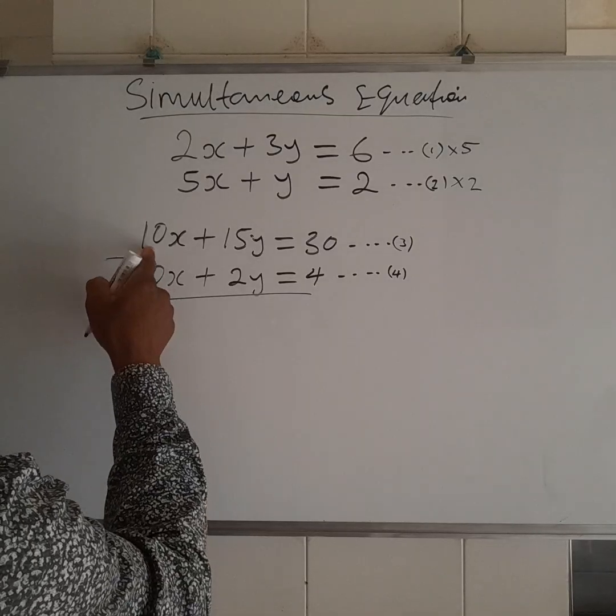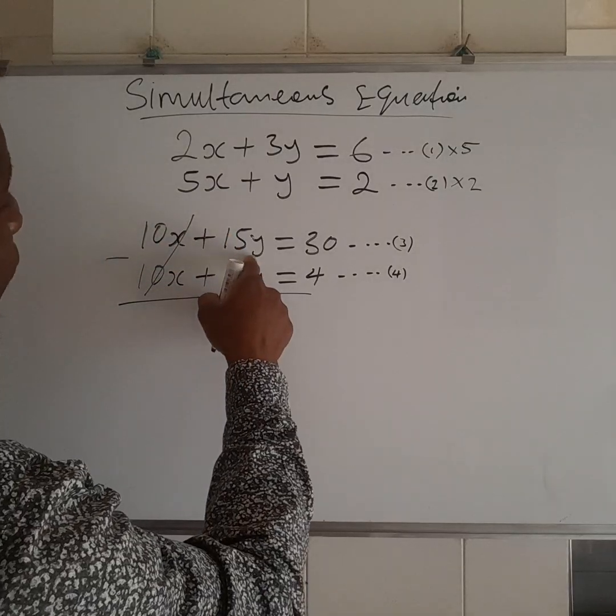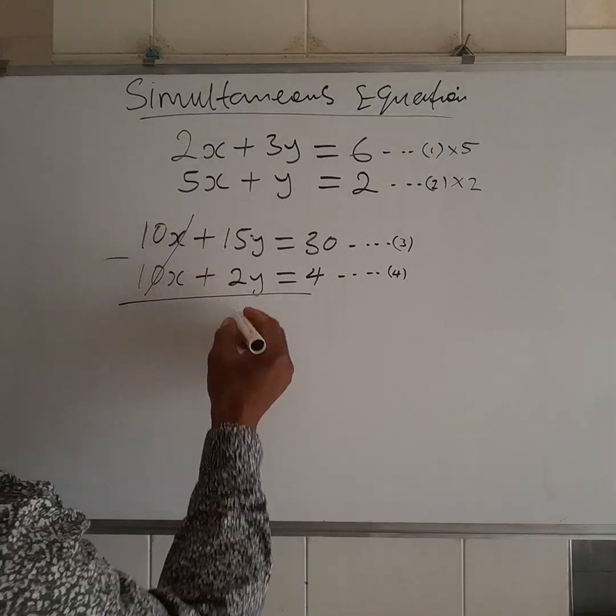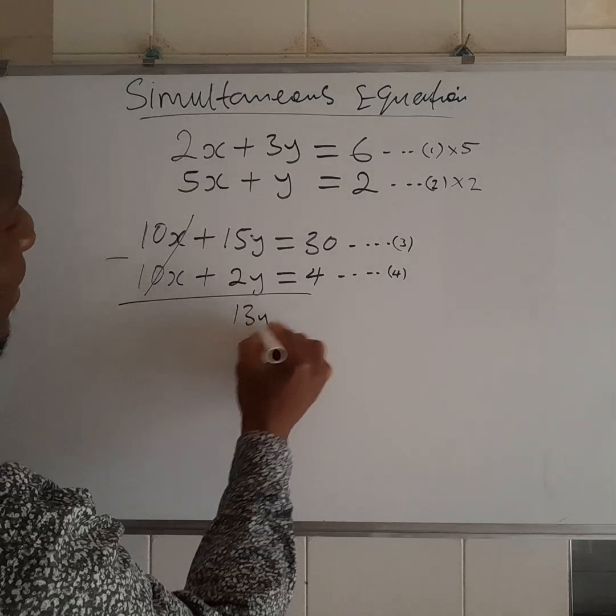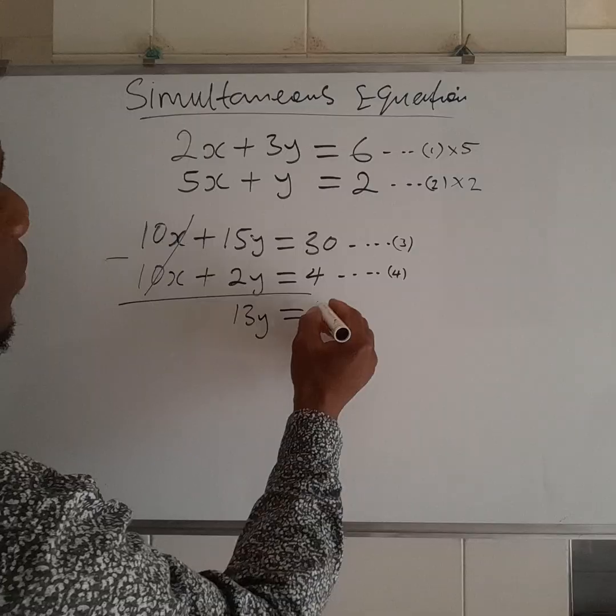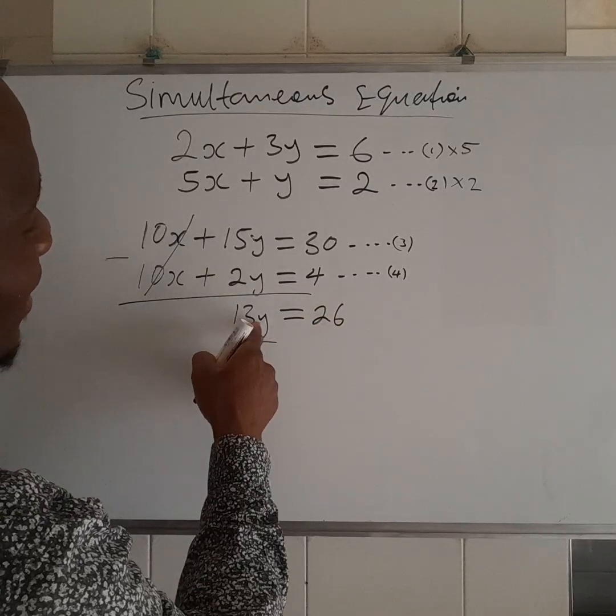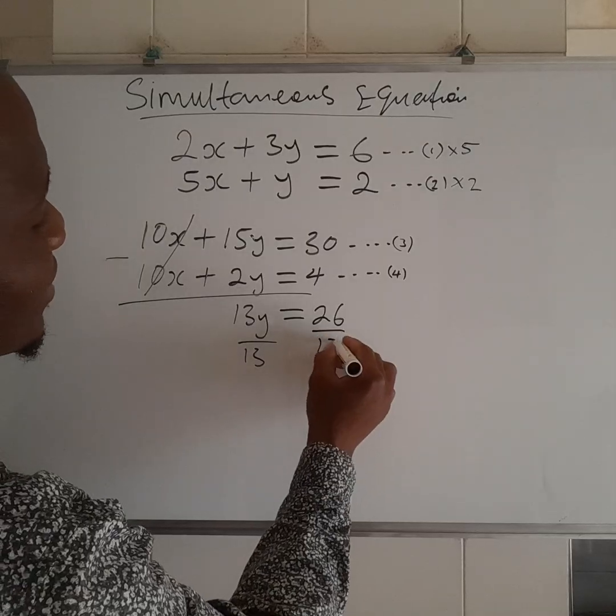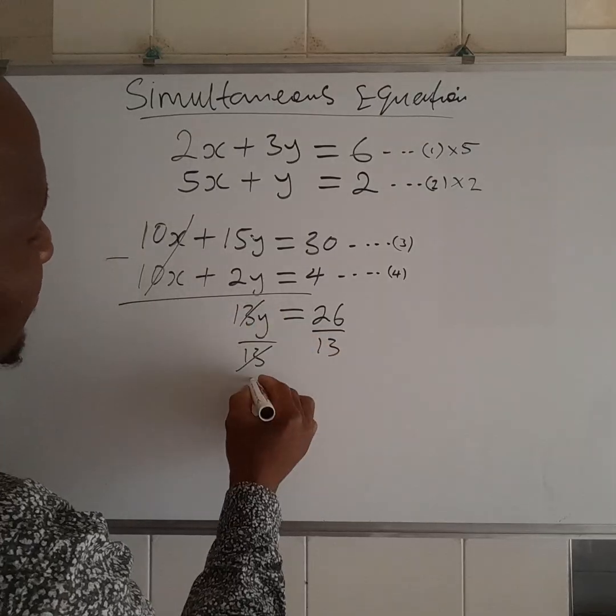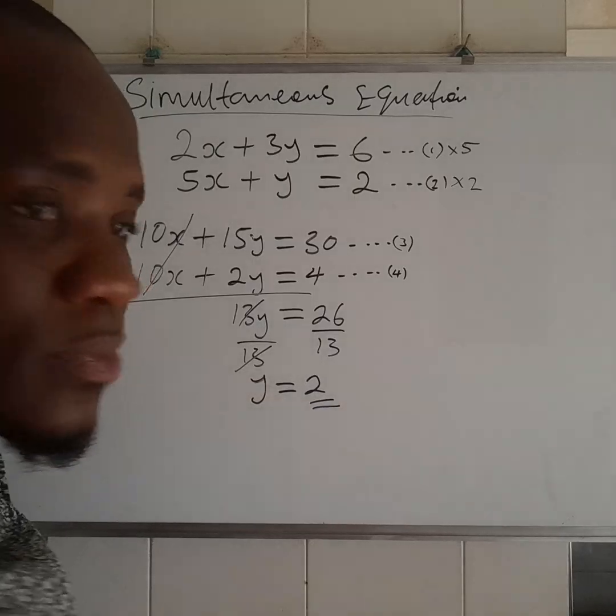So, 10x minus 10x, we go away. 15y minus 2y, you have 13y. 30 minus 4, you have 26. So, we divide both sides by 13 in order to get y. You have that the value of y is equal to 2.